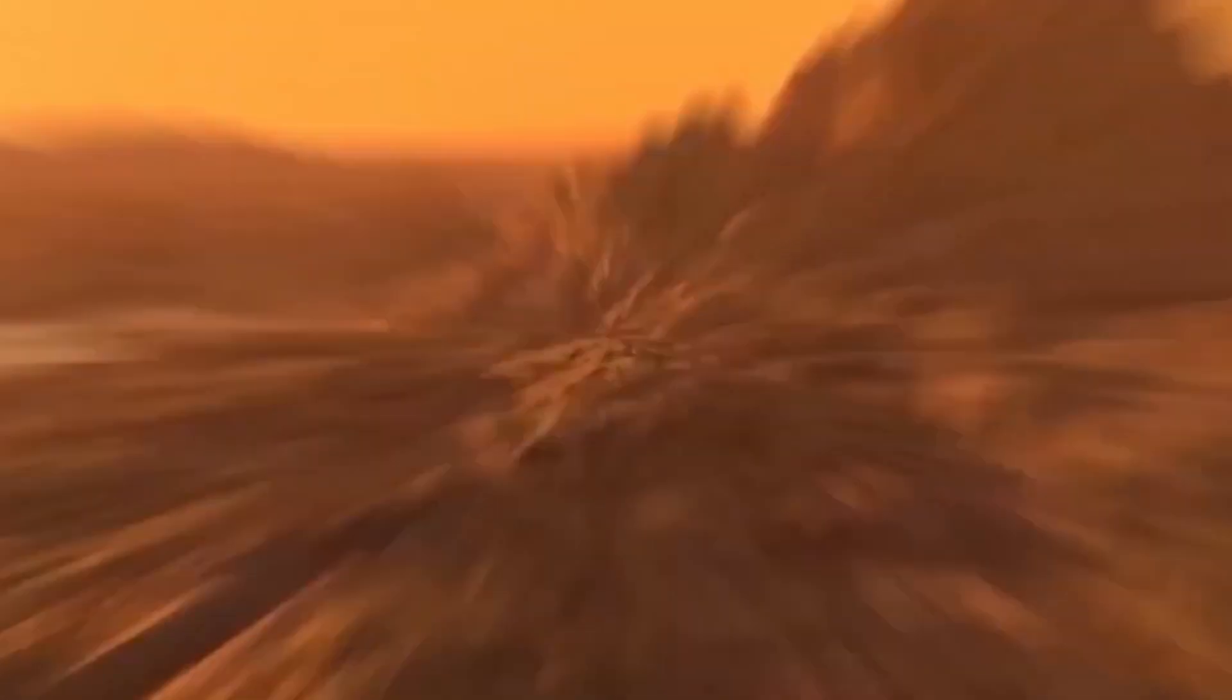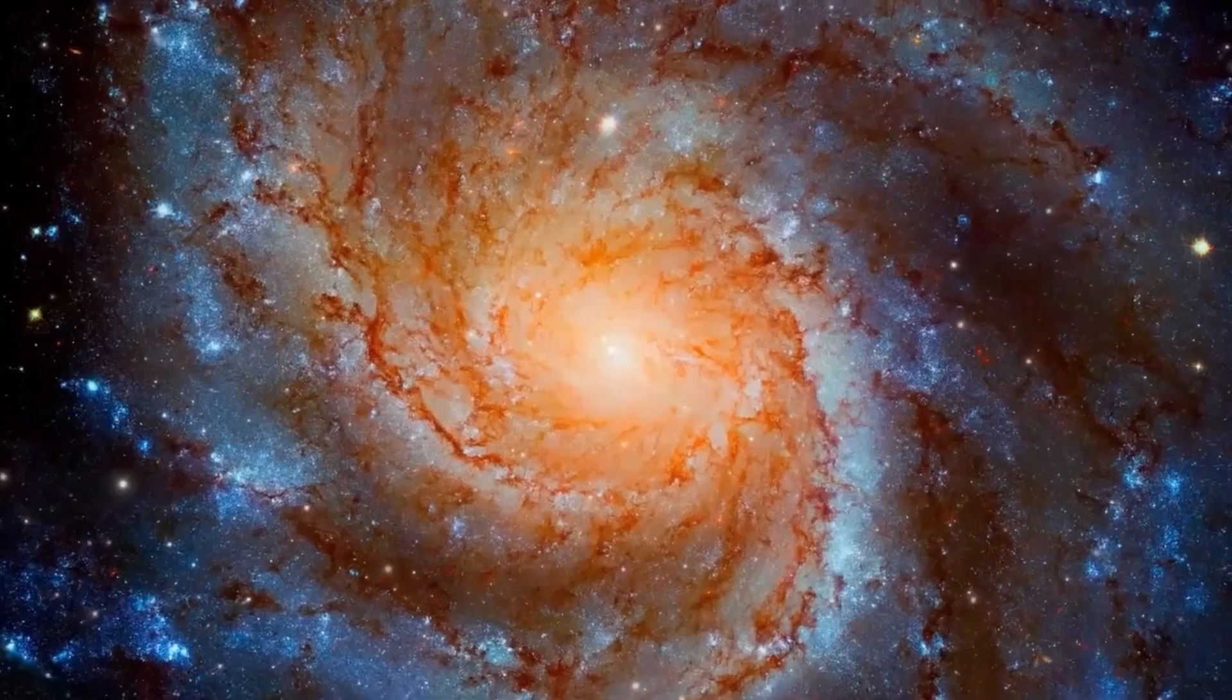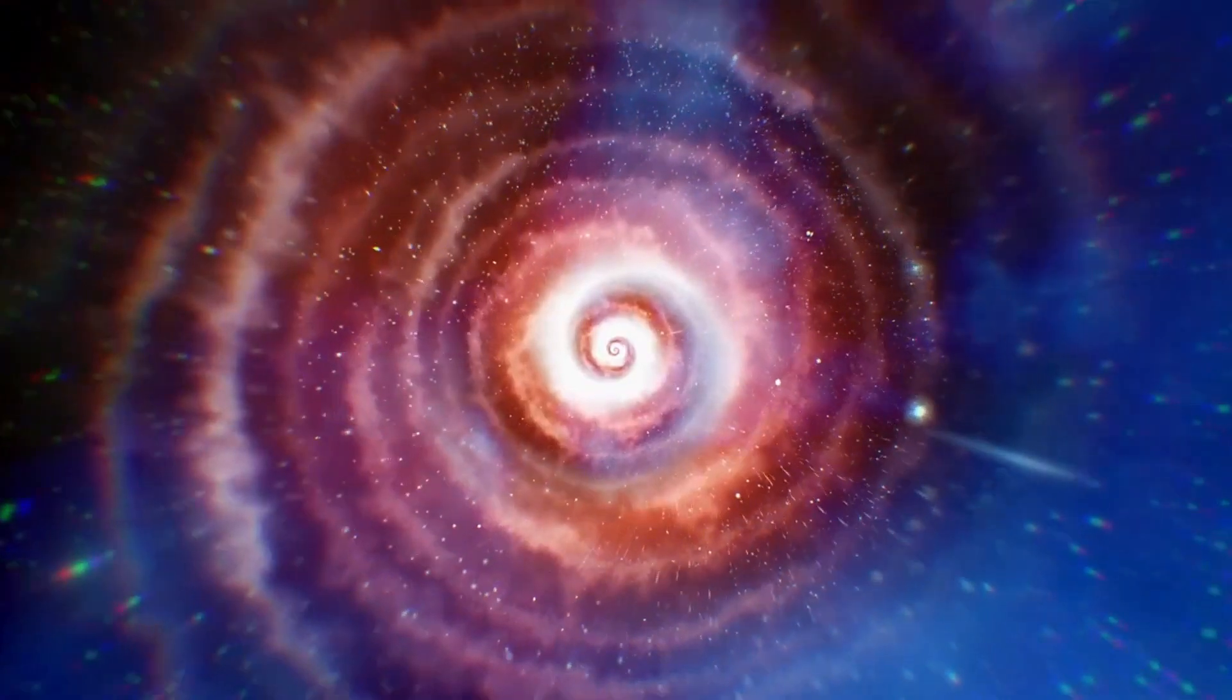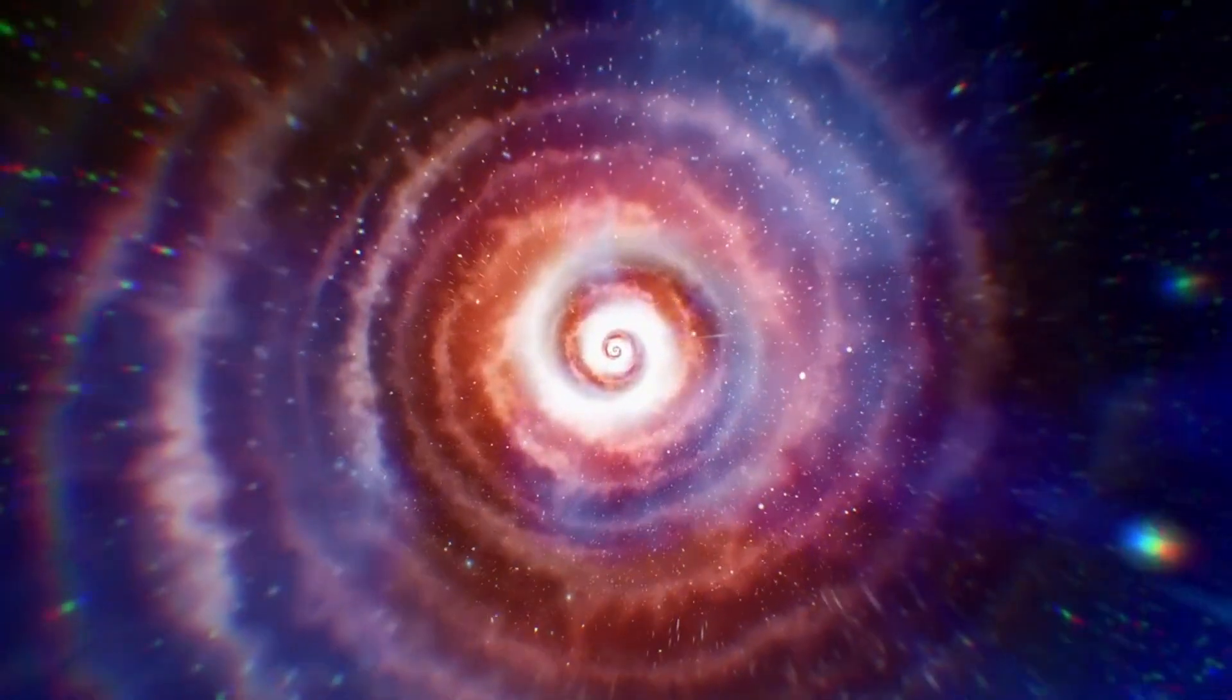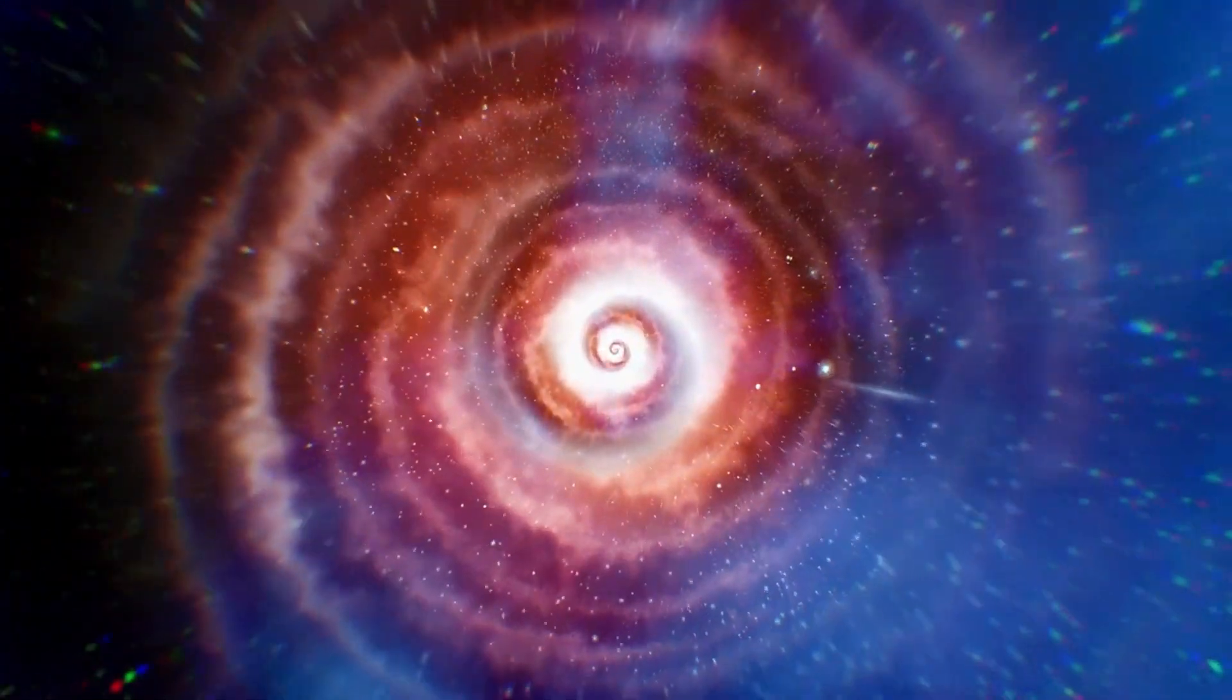It has a year that lasts only 112 Earth days and a distance from its star that is generally closer than Earth is to the Sun. Without a doubt, one side of the planet is constantly bathed in sunlight, while the opposite side remains in eternal darkness.